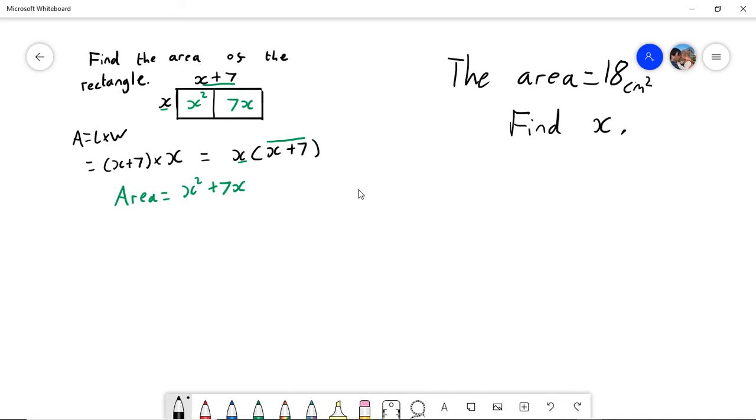So again, this would be a more complex problem. Exactly how you would go around finding x is something we're going to look at in the coming weeks, so don't worry too much about this now. But I want you to get a bit of an intuition about it. If they tell you that the area is 18, and you also know that the area is x squared plus 7x.